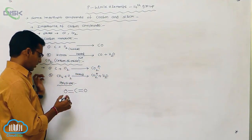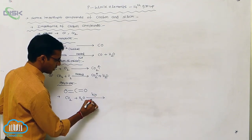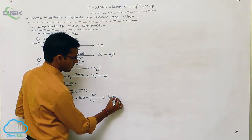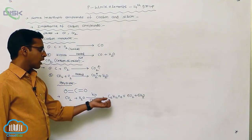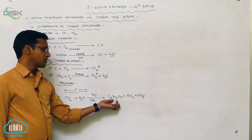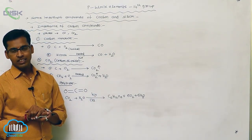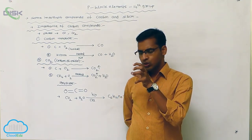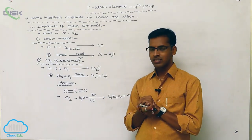Carbon dioxide reacts with water in the presence of photochemical conditions with chlorophyll to produce glucose: 6CO2 + 6H2O → C6H12O6 + 6O2. So carbon dioxide reacted with water in a photochemical condition with chlorophyll produces a carbohydrate called glucose. This is the photosynthetic reaction, and it usually occurs in plants.